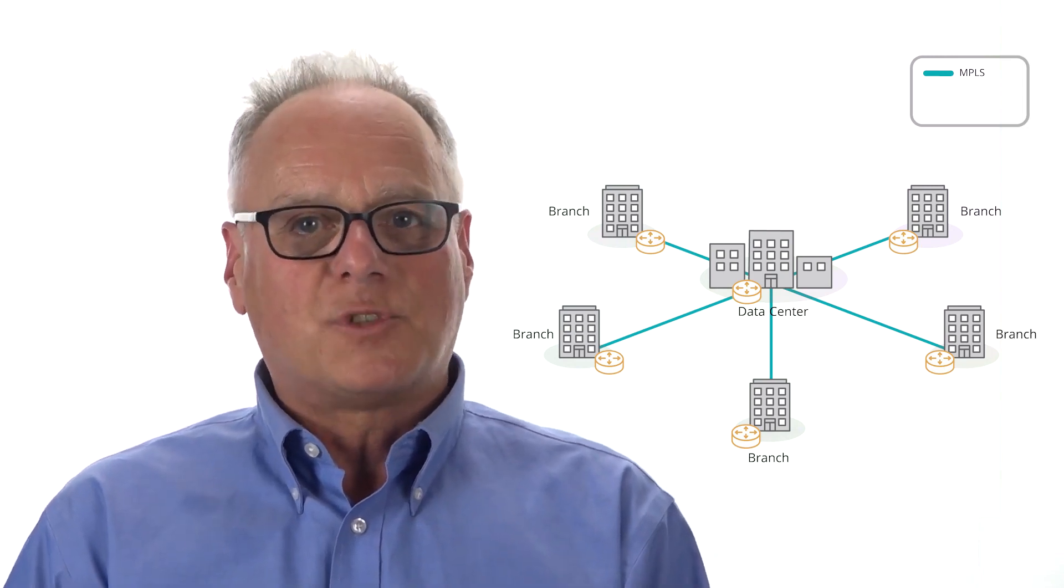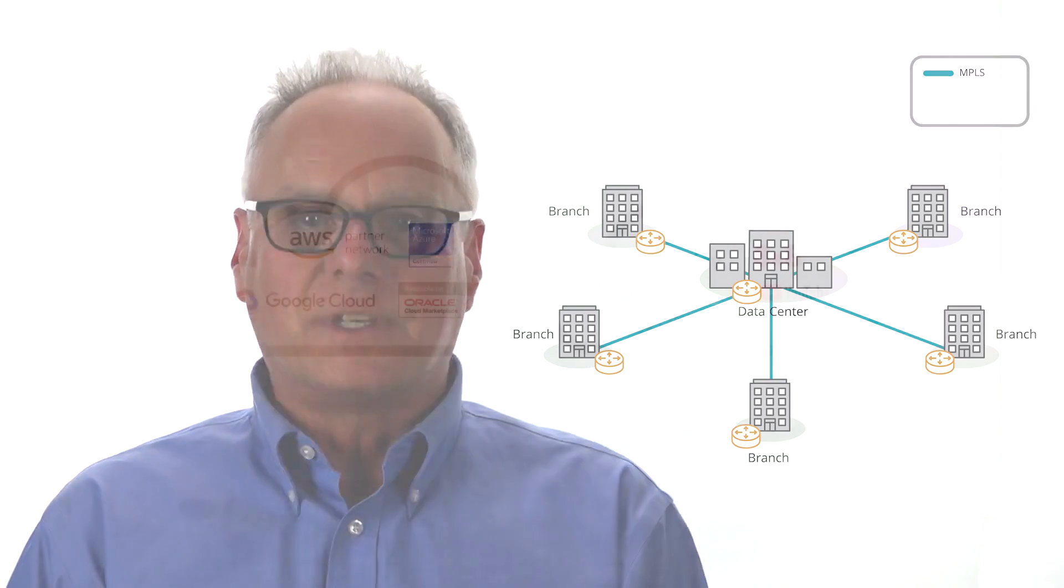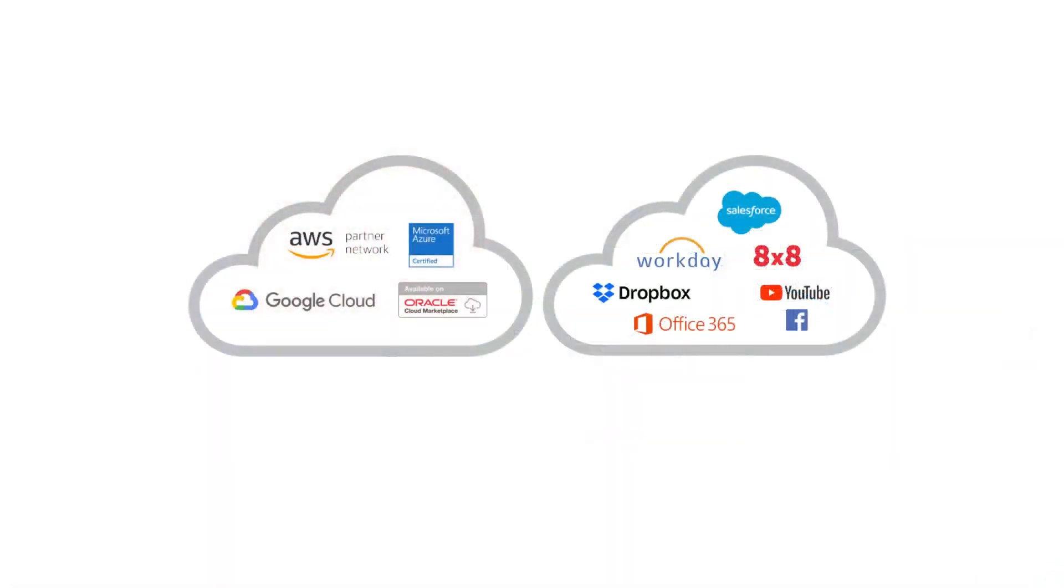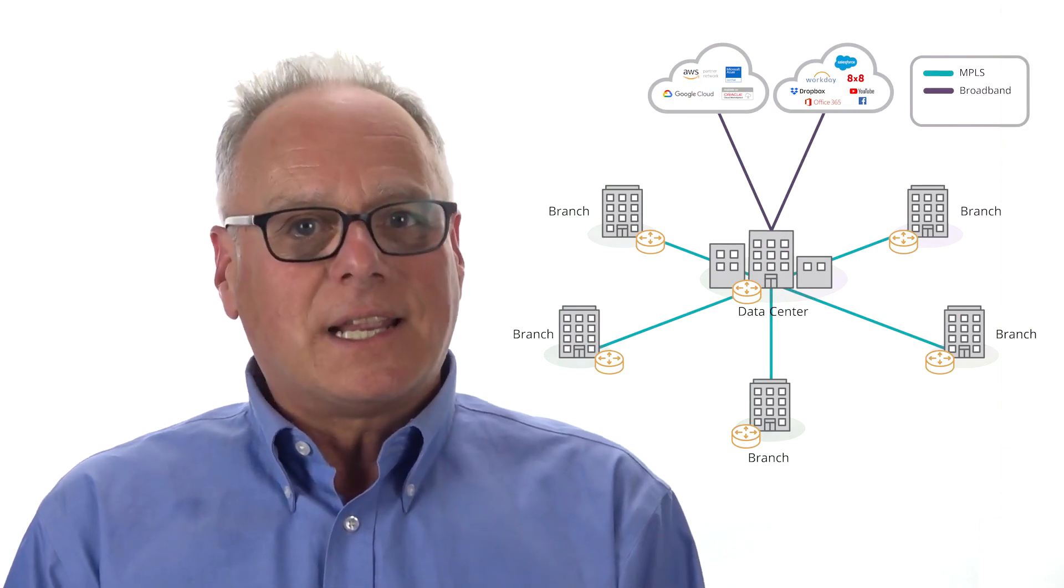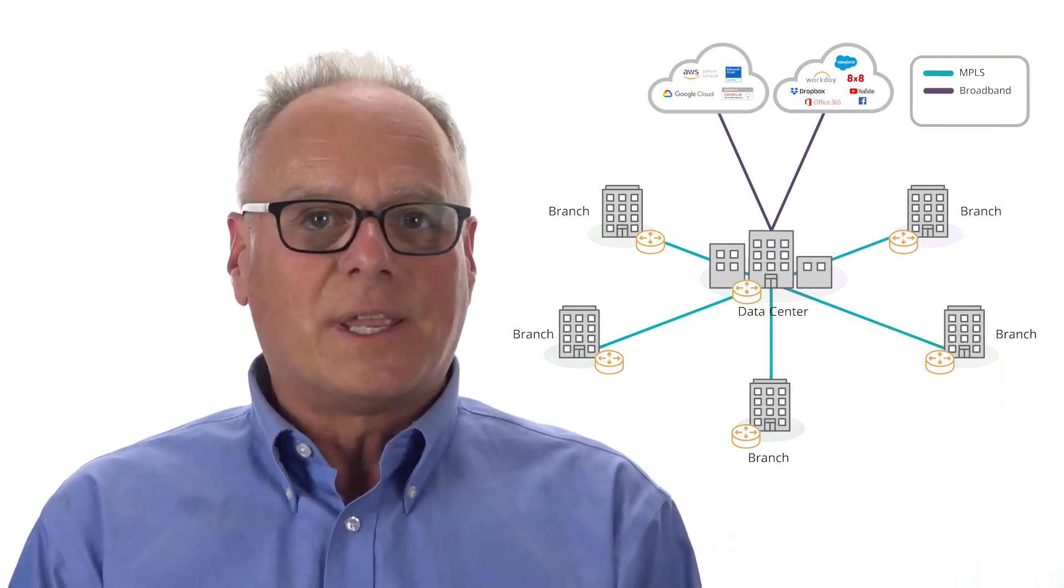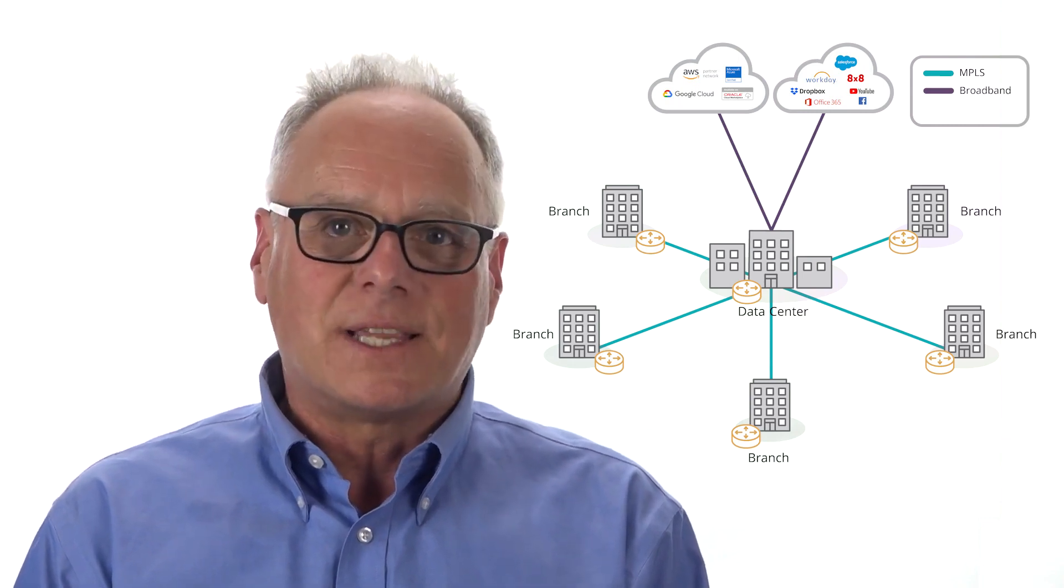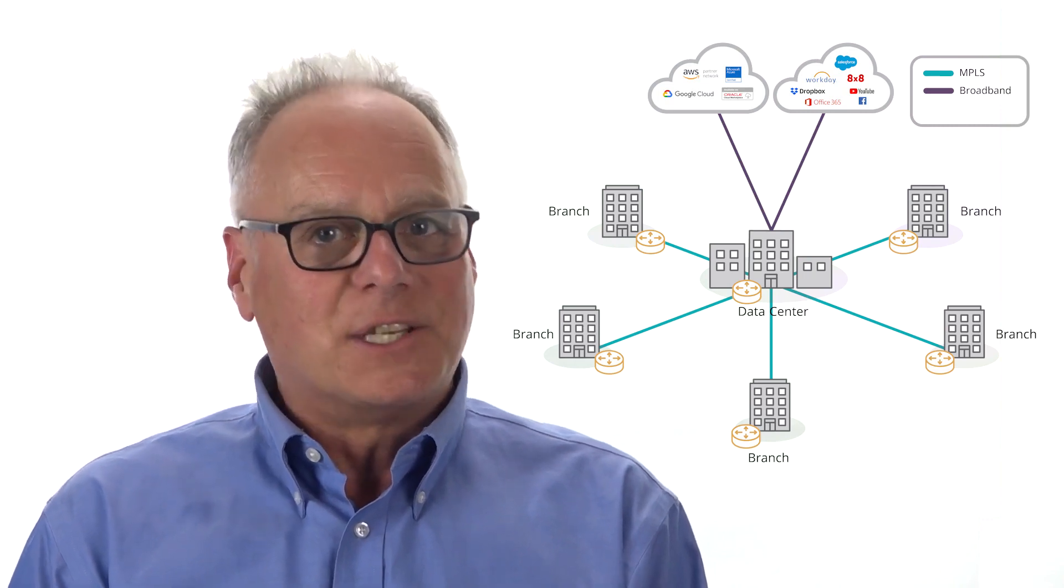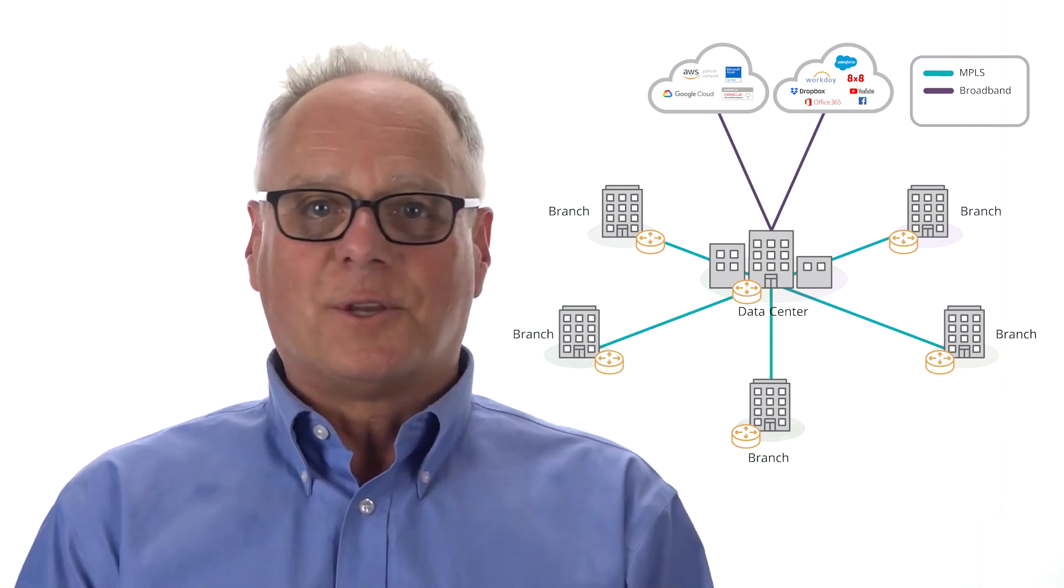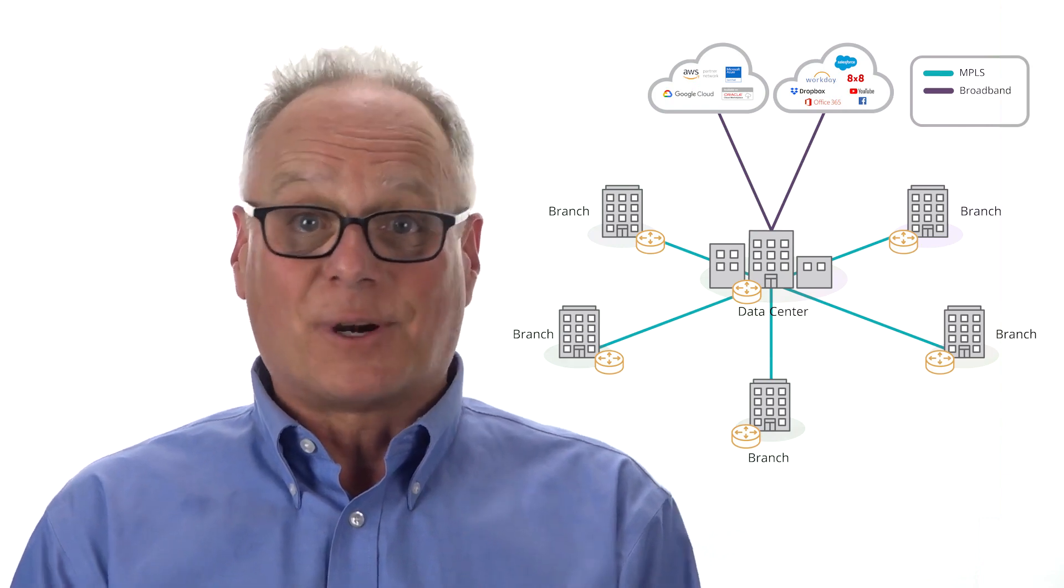But traffic patterns have changed with the introduction of applications moving to the cloud. These could be enterprise apps that are now hosted in Amazon Web Services or Microsoft Azure or Google Cloud, or software as a service apps like Salesforce.com, Workday, Office 365, Box, Dropbox, and even Facebook and more. Sending cloud traffic that is destined for the internet back to headquarters simply doesn't make sense. It adds delay that degrades application performance, and it consumes costly leased line bandwidth. Why not use the internet to reach apps that are hosted in the internet?